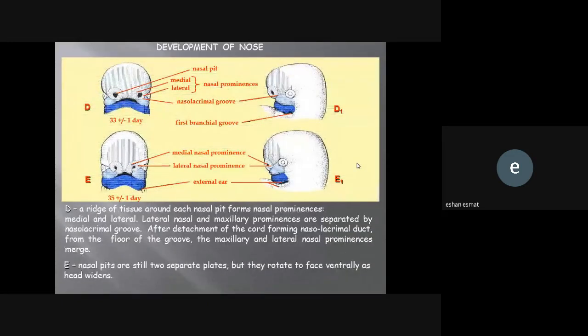Development of the nose: a ridge of tissue around each nasal pit forms nasal prominences, medial and lateral. Lateral nasal and maxillary prominences are separated by the nasolacrimal groove. This is the medial part of the nasal, this is the lateral part, and this is the nasolacrimal groove that will separate nasal from the maxilla. This groove will form the duct in the future. The medial parts will fuse together to become one part. Here you see at 55 days they will start to be near to each other to fuse.